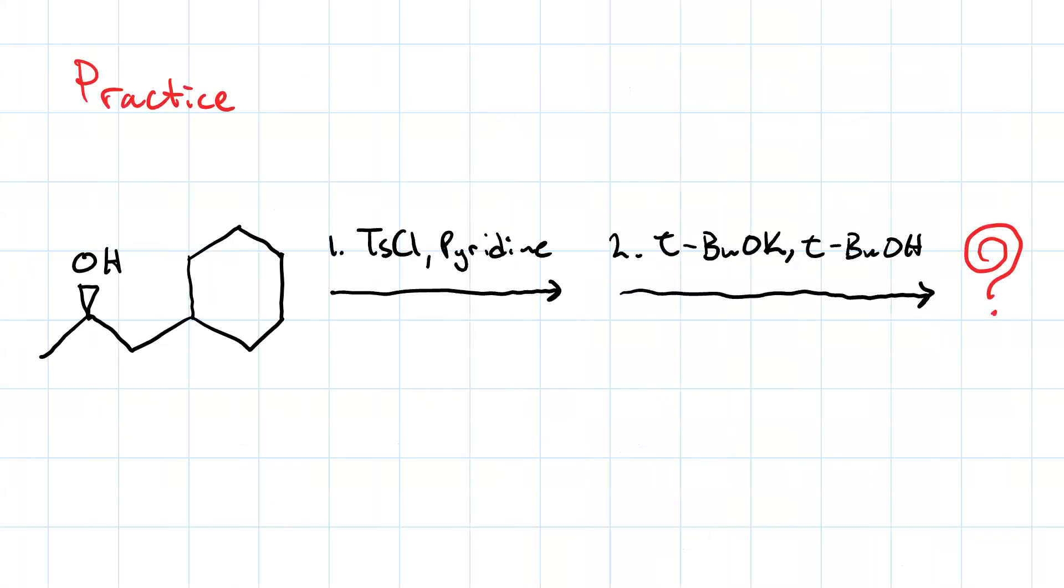Here's a practice question for you. If I take this secondary alcohol and first treat it with tosyl chloride and pyridine, and second with tert-butoxide and t-butanol, what will my outcome be?